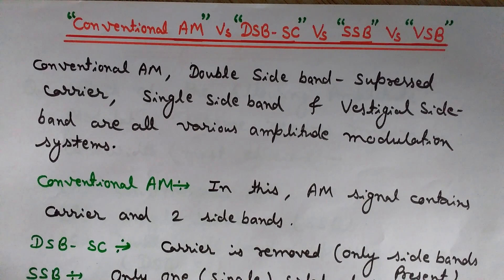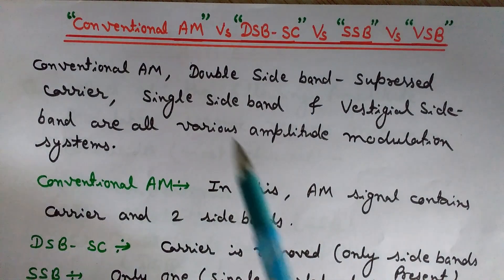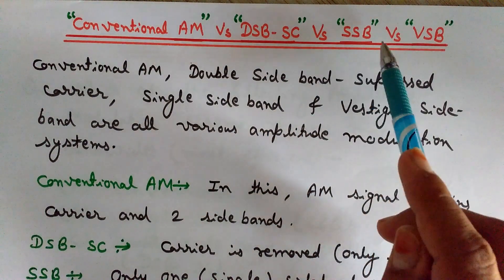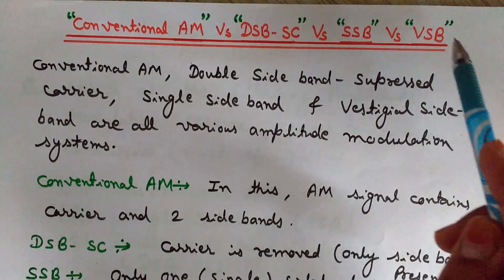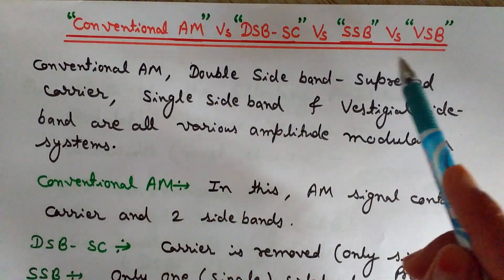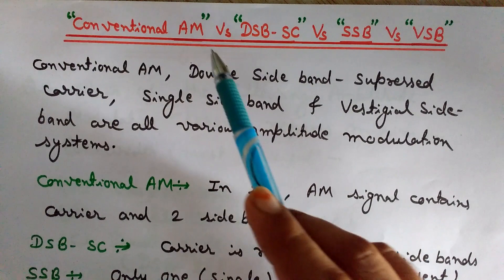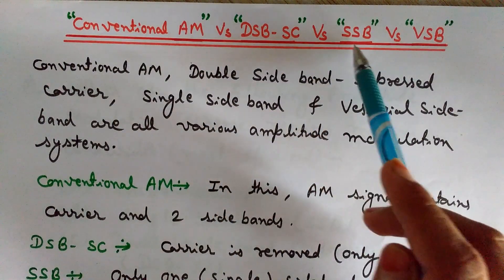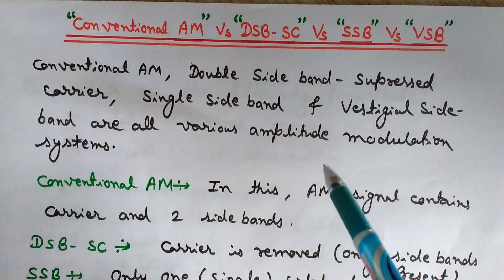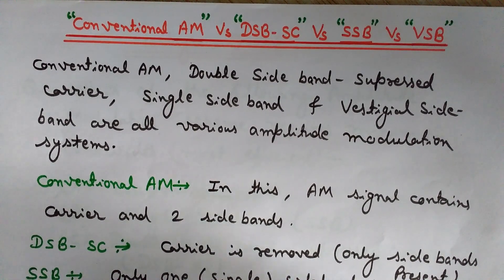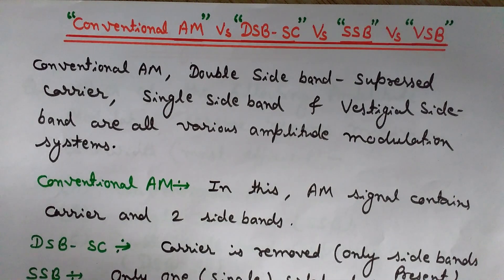Hello, welcome to Engineering Made Easy. I am Lalith Vasist. In this video we will discuss conventional AM versus double sideband suppressed carrier versus single sideband versus vestigial sideband. These are all types of amplitude modulation, and we will see the basic differences, advantages, disadvantages, and applications of each scheme.